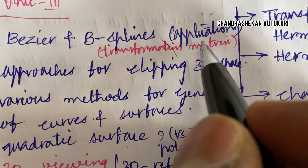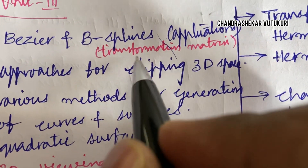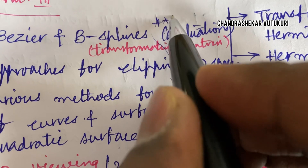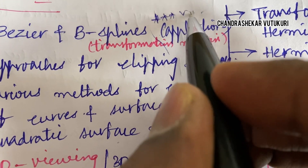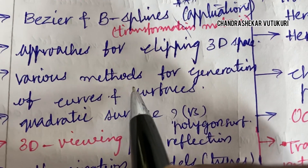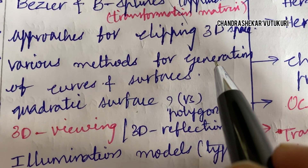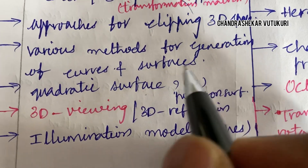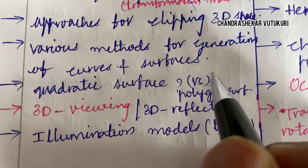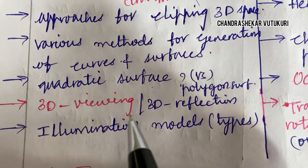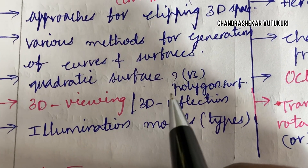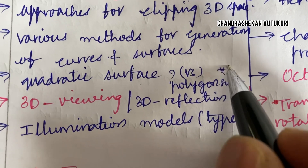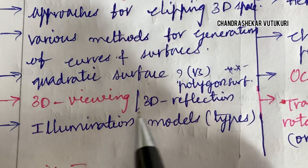B-spline and B-spline applications, and the transformation matrix related to this — you'll be getting one question for sure. Approaches for clipping 3D spaces, as well as various methods for generation of curves and surfaces. Quadratic surface versus polygon surface may be a short question or a long question this time.